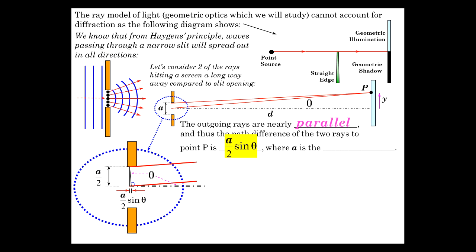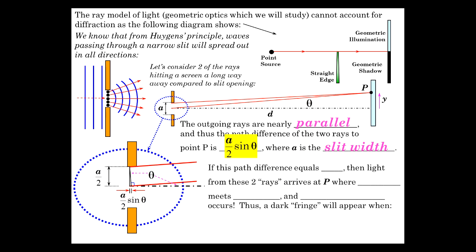And I've demonstrated this before with the cardboard waves in class too, where the crests meet. And that's the kind of thing we're talking about here. It's the interference pattern produced by the little wavelets. So A is the slit width. If the path difference equals one half a wavelength. So if the path difference between this one and this one is a half a wavelength. Then light from the two rays arise at P.